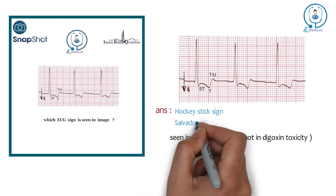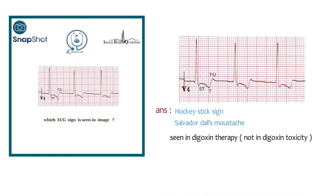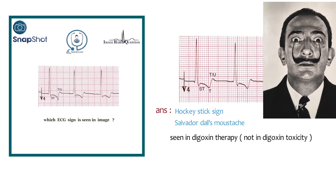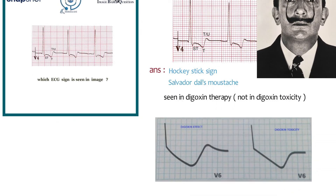Who is Salvador Dali? He was a famous painter known for his mustache — more than his painting. Now I want you to remember how to differentiate between digoxin effect and digoxin toxicity on ECG. In digoxin therapy, you can see a down-sloping of the ST segment, and the T wave rises above the baseline. In digoxin toxicity, there is the same sloping of the ST segment; however, the T wave will not be above the baseline — it will either be flattened or inverted. In this question, we have the hockey stick sign or Salvador Dali mustache sign.